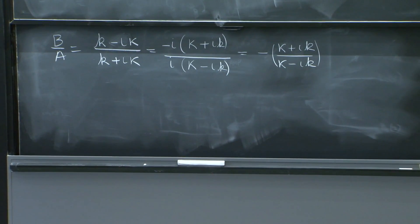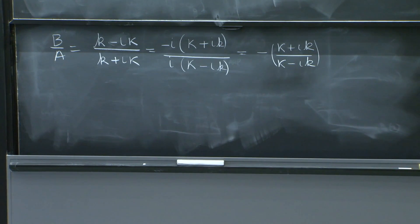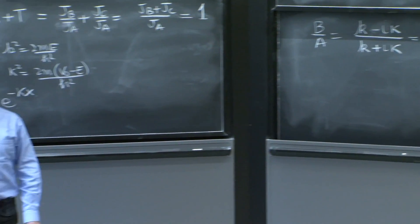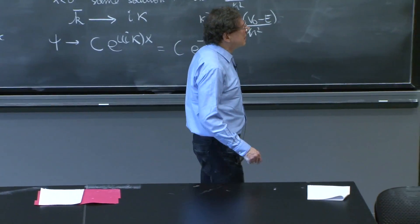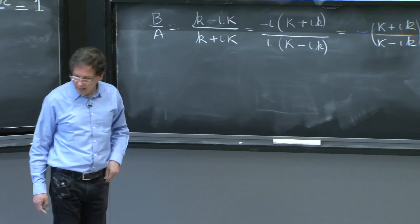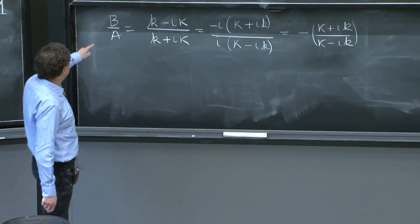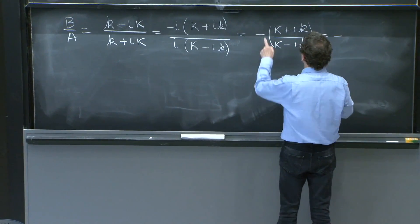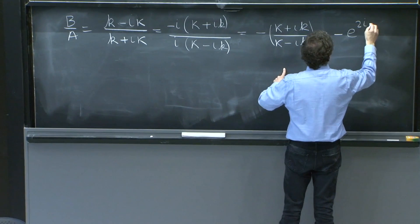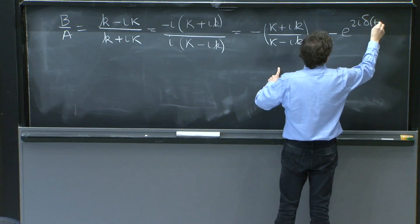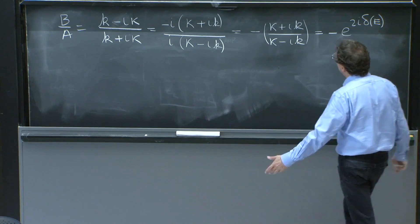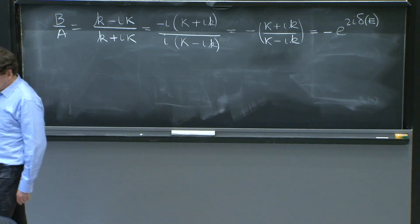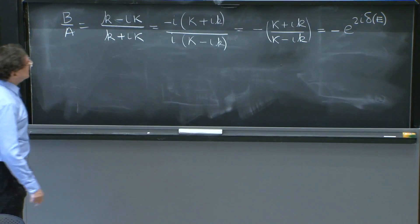But when you see that ratio, you're seeing the ratio of two complex numbers of equal length. And therefore, that ratio is just a phase. It's not any magnitude. So this is just a phase, and it deserves a new name. There is a phase shift between the b coefficient and the a coefficient. And we'll write it as e^(-2iδ). That depends on the energy. I'll put δ of the energy, because after all, κ, k, everybody depends on the energy. So let's call it 2iδ(E).